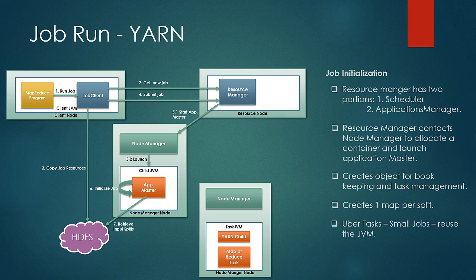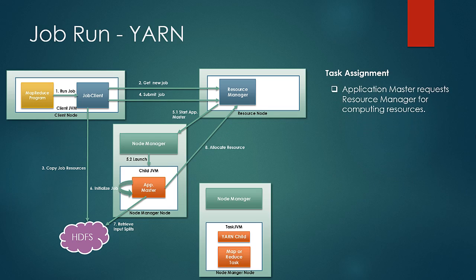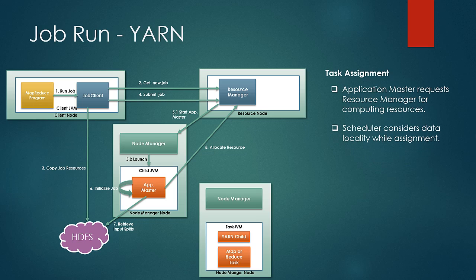Then comes the assigning phase. If the task is not an Uber job, the application master requests the resource manager to allocate the resources needed. The scheduler knows where the splits are located, gathering this information from the heartbeats of the node managers, and uses this information to consider data locality while allocating resources. It tries as far as possible to allocate a node where data locality is present. If that cannot be the case, it considers rack-local nodes. If it fails to find even a rack-local node, it allocates any node randomly from the available nodes.